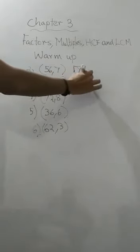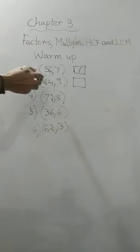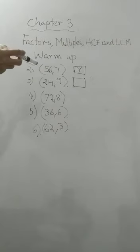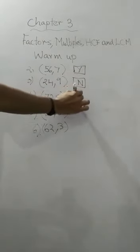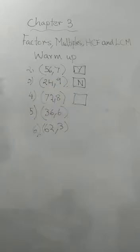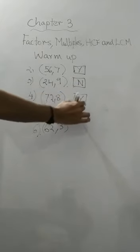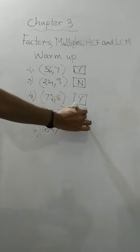Next one, 24 and 9. In the 9's table, will you get 24? No. 9 twos are 18 and 9 threes are 27. So 24 is not there. You will write N. Here, 72 and 8. In the 8's table, 9 eights are 72. So this is a yes. Next one, 36 and 6. 6 sixes are 36, so this is a yes.